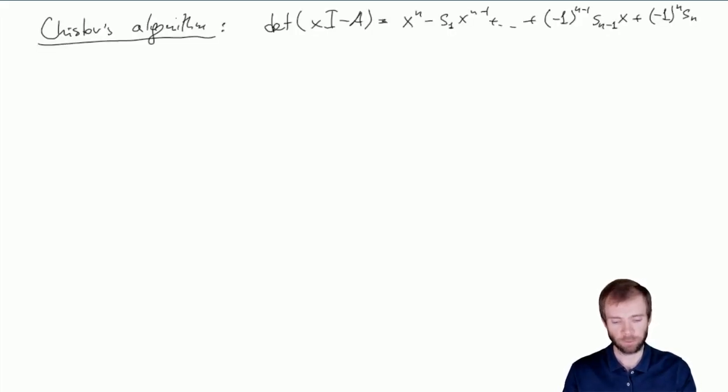Well, for instance, we can find inverse matrices quickly. So due to Chishtov's algorithm, we know all the coefficients of the characteristic polynomial of a matrix.